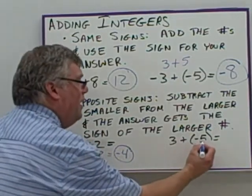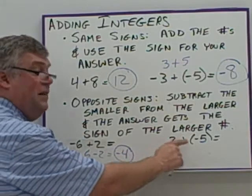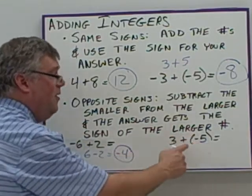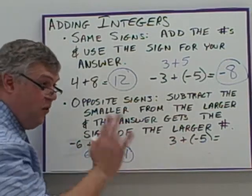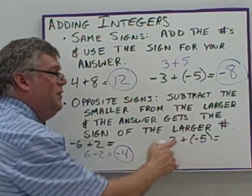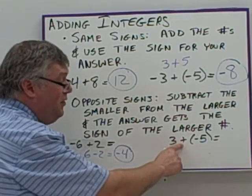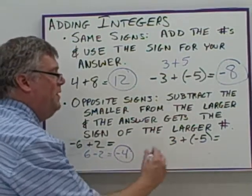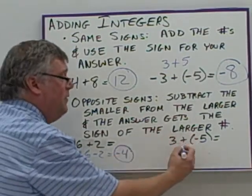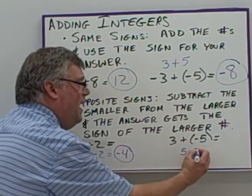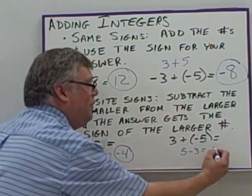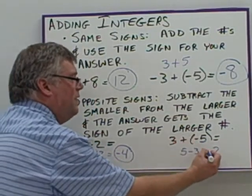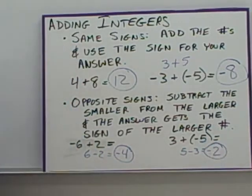Over here we have positive 3 and negative 5 being added. Notice the parentheses — we cannot have plus and minus together as that would be a different operation sign. The parentheses help separate the operation from the sign of the number. Since we're adding opposites, we find which is larger: 5 is larger than 3, so we do 5 minus 3, giving us 2. The sign of the answer is the sign of the larger number, which was negative, so we get negative 2.